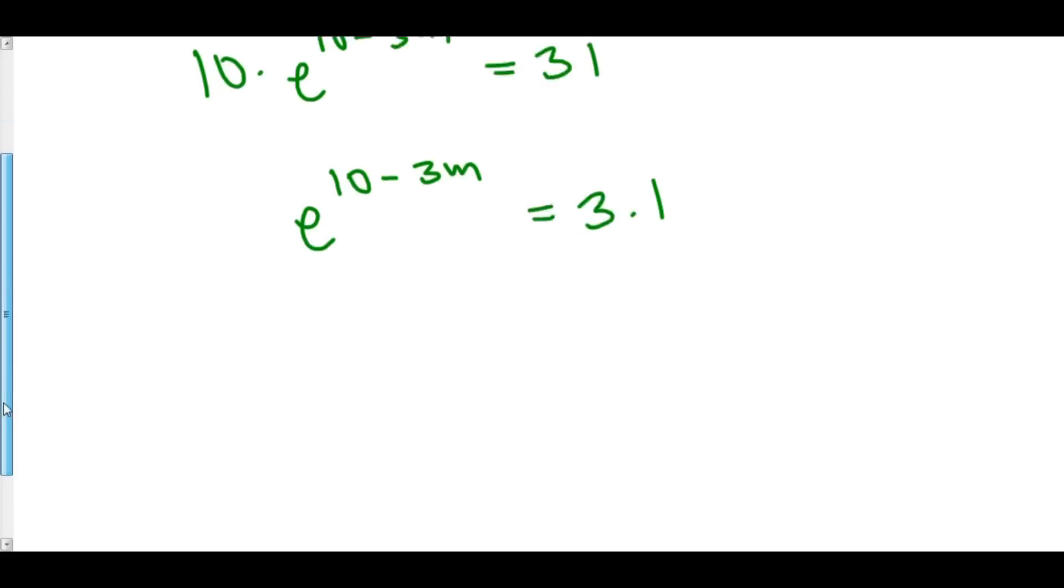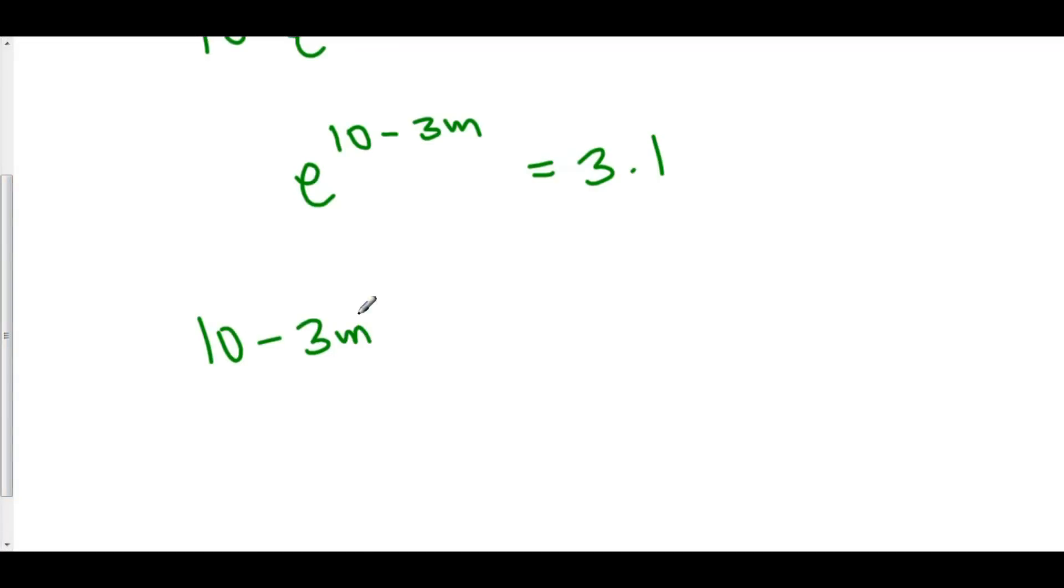We can now take the natural log of both sides. So we have 10 minus 3m times the natural log of e is equal to the natural log of 3.1. Well, natural log of e is just 1 because the base is e and it says e to what power is equal to e? The answer is 1. So this goes away.